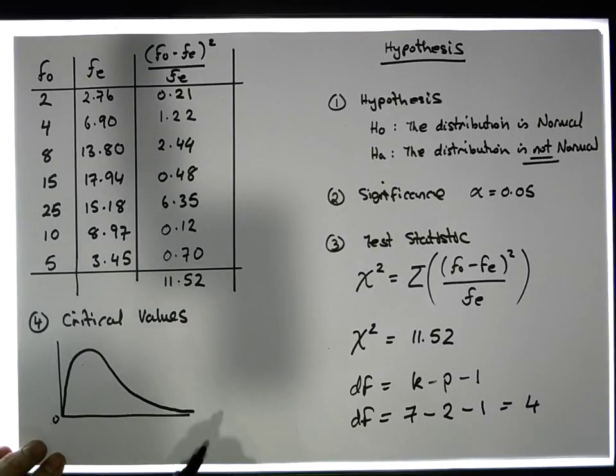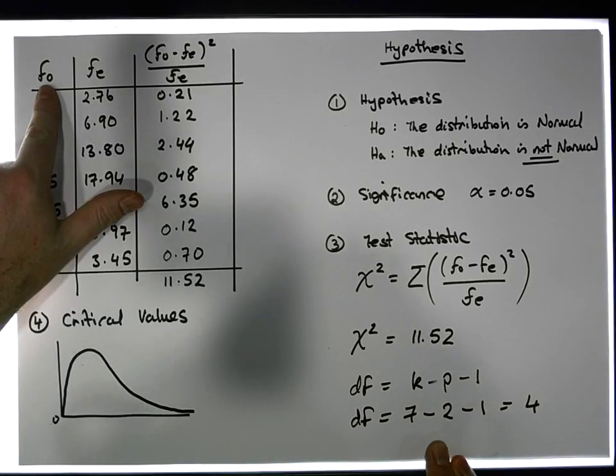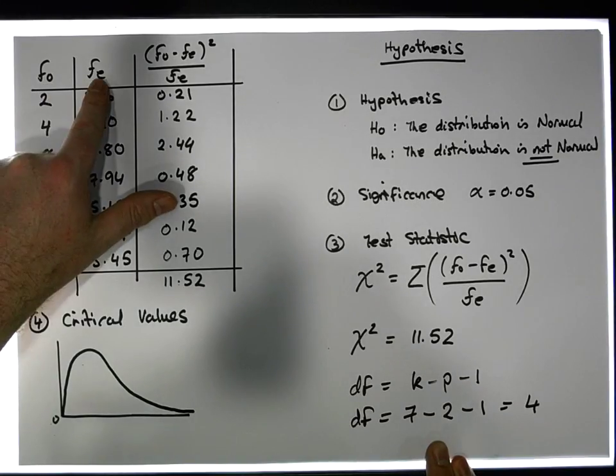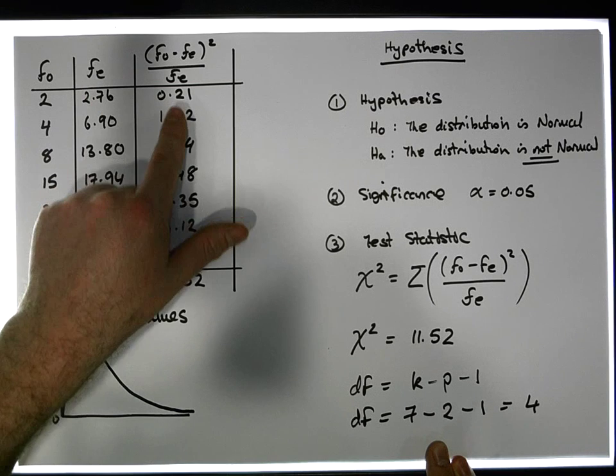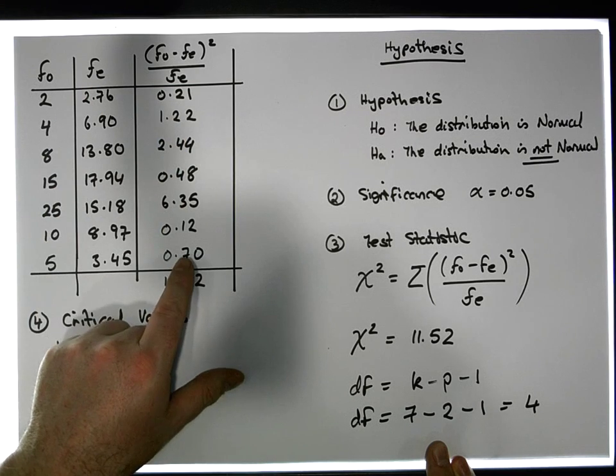As I said in previous videos, when we're looking at this particular test, if there was no difference between the observed frequencies and the expected frequencies, we'd expect each one of these values to be zero and then the sum of all the values would also be zero.